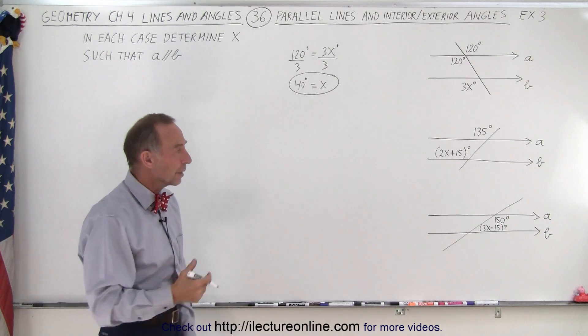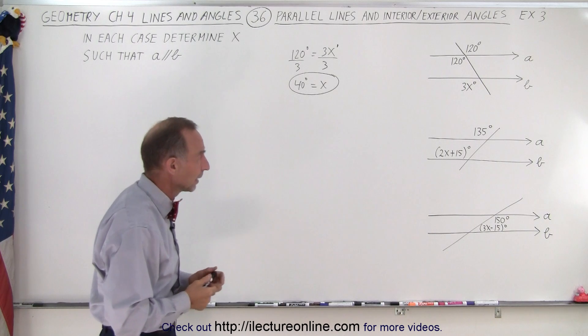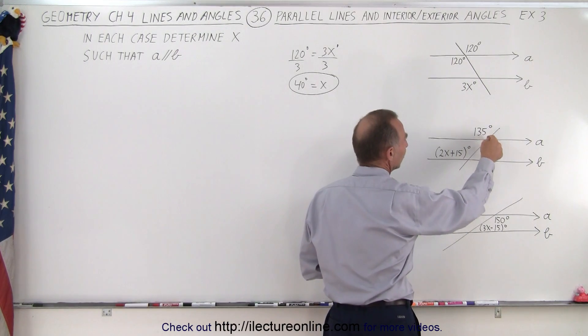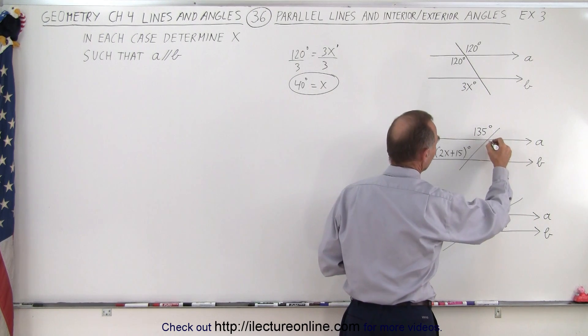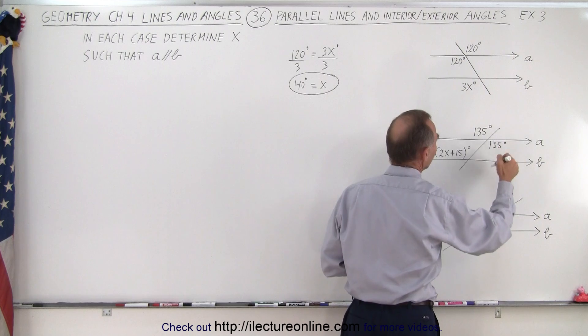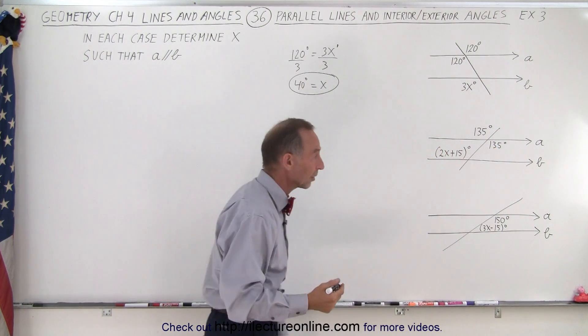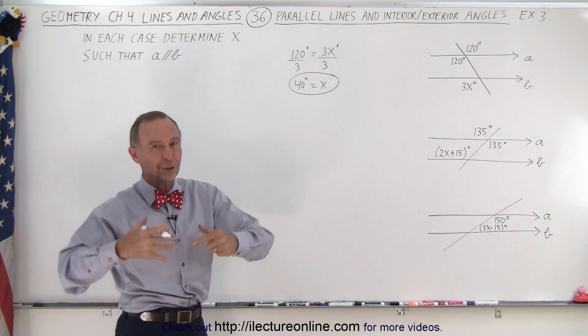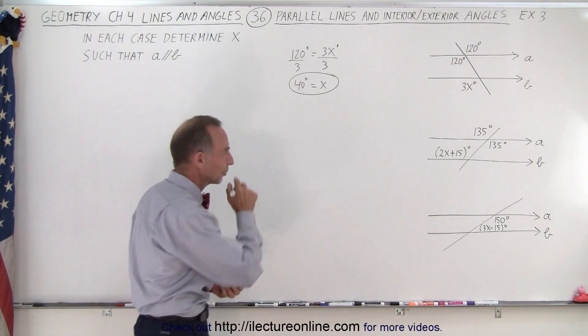We use the same mathematical trick in case two. In case two we can see that these two angles—they're called vertical angles or opposite angles—they must be equal, so I'll write this as 135 degrees. And now we have two corresponding interior angles and we know that they must be equal to one another, essentially they must be congruent to one another if lines a and b are parallel to one another.